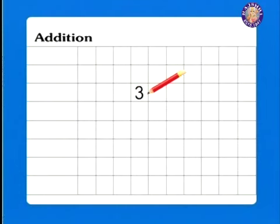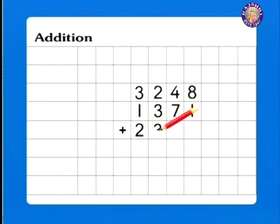Start with adding 3,248, 1,371, and 2,353. Simple! Like before, start from the right. Add 8 plus 1 plus 3 to get 12. 2 goes down, carry over 1. Add 1 plus 4 plus 7 plus 5. And what do we get? 17! Yeah!